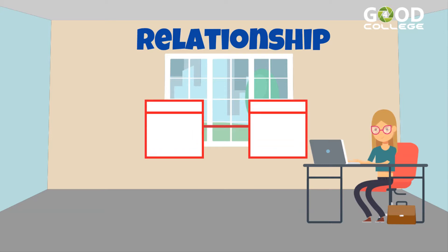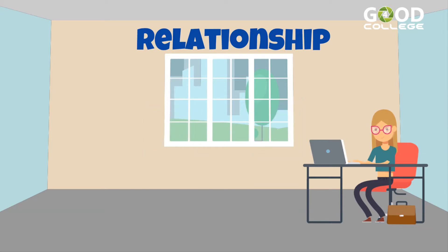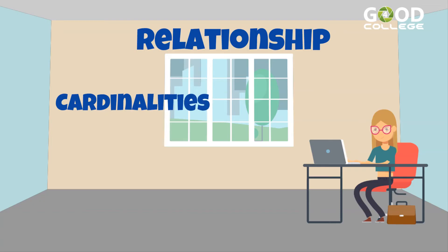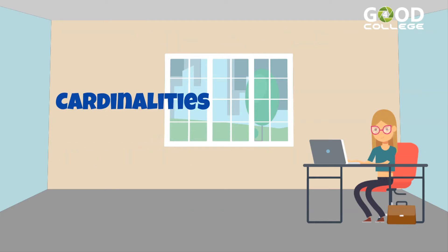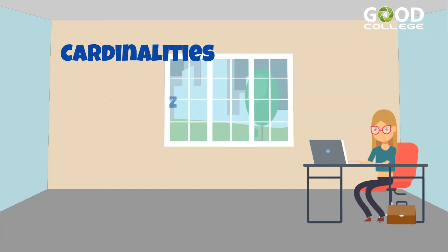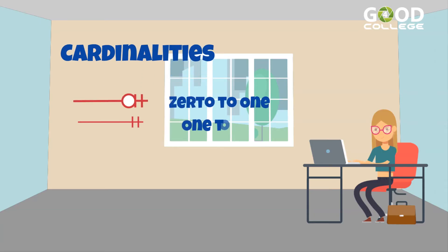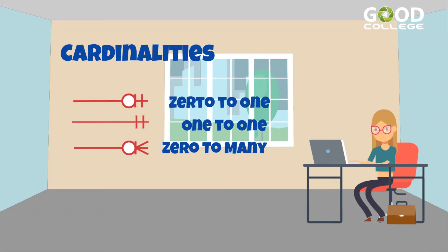To complete the relationship, cardinalities are applied. Cardinalities represent the maximum and minimum number of times which the instance of an entity can be associated with an instance in the connected entity. The cardinalities are represented in the following manner: 0 to 1, 1 to 1, 0 to many, 1 to many.